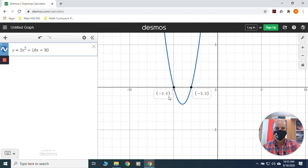You tap, it shows up for you. I've got my two x-intercepts. We've got negative 5 and then negative 3, 0.